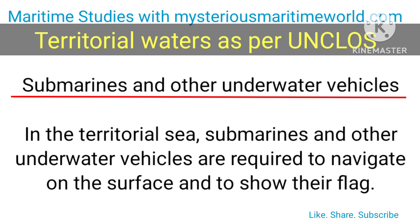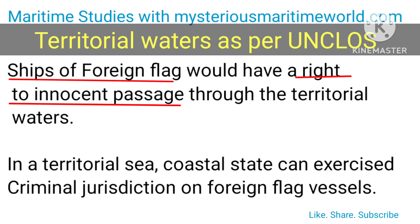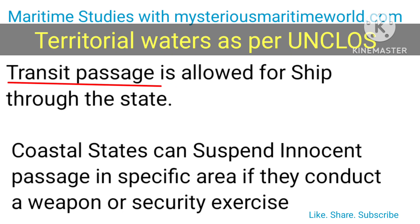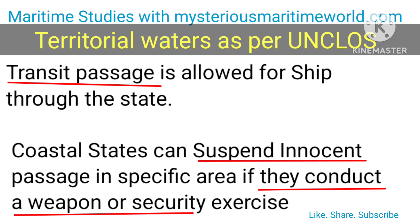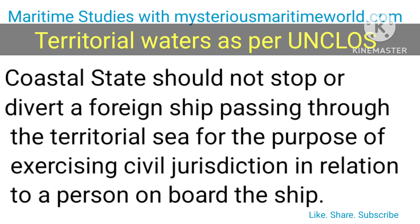In the territorial sea, submarines and other underwater vehicles are required to navigate on the surface and to show their flag. Ships of foreign flag have a right to innocent passage through the territorial waters. In a territorial sea, the coastal state can exercise criminal jurisdiction on foreign flag vessels. Transit passage is allowed for ships through the state. Coastal states can suspend innocent passage in specific areas if they conduct a weapon exercise. States can put laws concerning the safety of navigation, pollution prevention, uncontrolled fishing activities, customs, immigration, and health and sanitary arrangements. Coastal states should not stop or divert a foreign ship passing through the territorial sea for the purpose of exercising civil jurisdiction in relation to a person on board the ship.